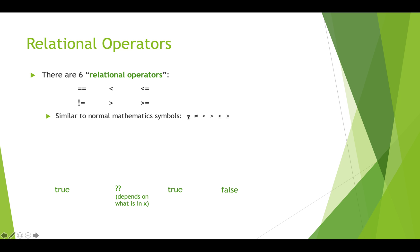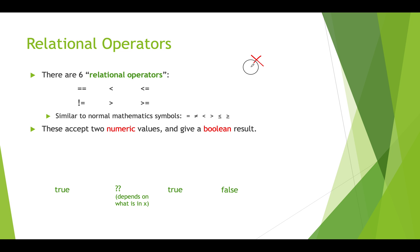It says: does what's on the left equal what's on the right? The reason we use equals equals here is because a single equal sign in Processing and in Java and many other programming languages is used for assignment. So you've seen things like x equals 5, which assigns the value 5 into the variable x — that's a single equal sign. So we can't use this to test for equality when we're already using it for assignment. It's really important to note that we use a double equal sign to test for equality.